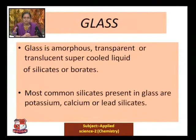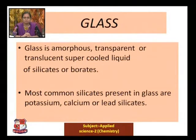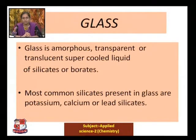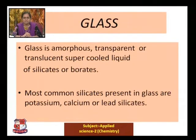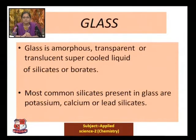One has to remember the most common silicates present in glass are potassium, calcium, or lead silicates. Glass is basically a super cooled liquid of the silicates and borates. Depending on the amount of potassium, calcium, and silicates present, the glass is attributed very different properties. The term 'super cooled liquid' is very specific when we define glass.